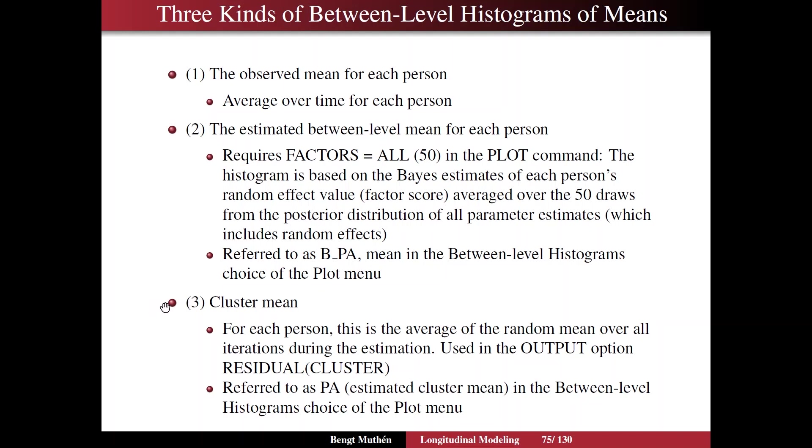Now the third option is cluster mean, which is quite different, although it comes out quite similar as well. For each person, this is the average of the random mean over all iterations during the estimation. That's a little bit different, based on different sets of iterations than number two. And this approach is used in the output option residual cluster. It's referred to as PA estimated cluster mean in the between-level histograms choice.